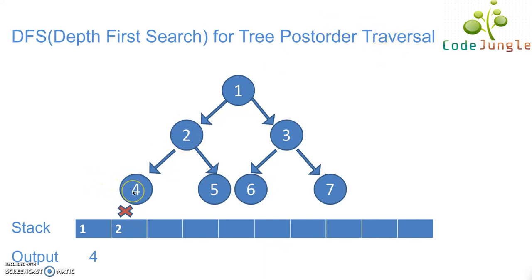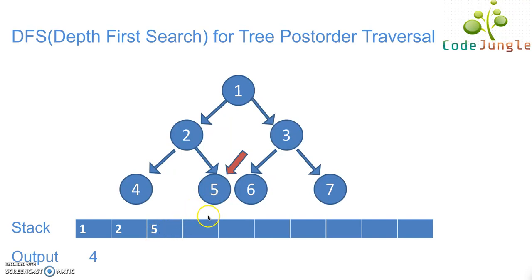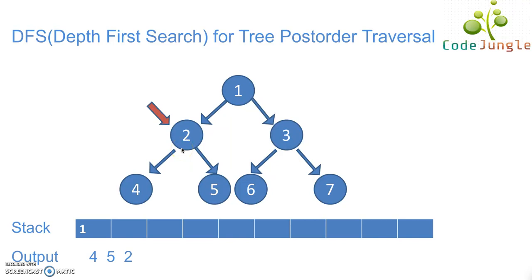Our pattern should be left node that is four, right node that is five, and then root node that is two. So now we put four into the output and we pop it out of the stack. Next we go to the next element that is five. Five is pushed into the stack and then we check if there is a left or right element. In the case of five there is no child node, hence five is popped out of the stack and kept in the output. Next we go to the next node that is two. Because the left child and the right child of two have been covered, we pop two from the stack and put it into the output.